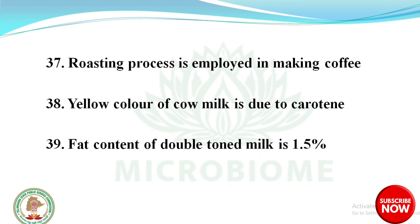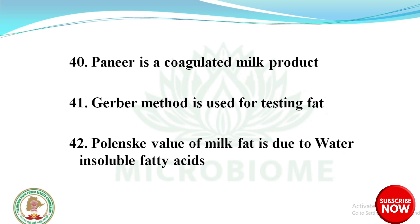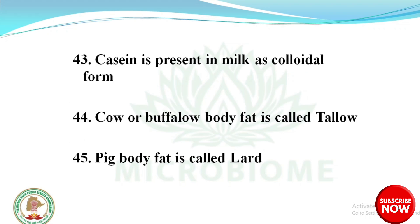The yellow color of cow milk is due to carotene. Fat content of double-toned milk is 1.5%. Paneer is a coagulated milk product. Gerber method is used for testing fat. Polanski value of milk fat is due to water-insoluble fatty acids. Casein is present in milk in colloidal form. Cow or buffalo body fat is called tallow. Pig body fat is called lard.